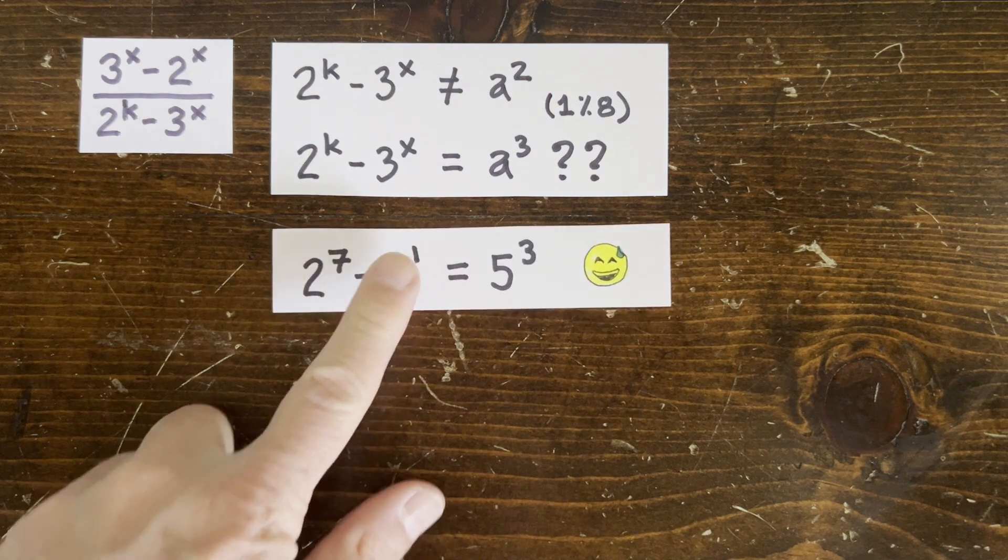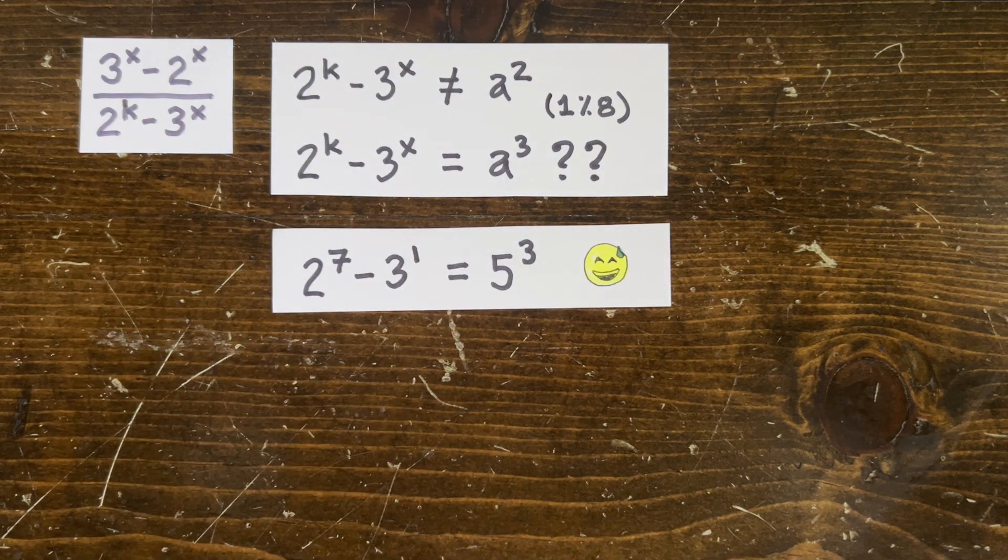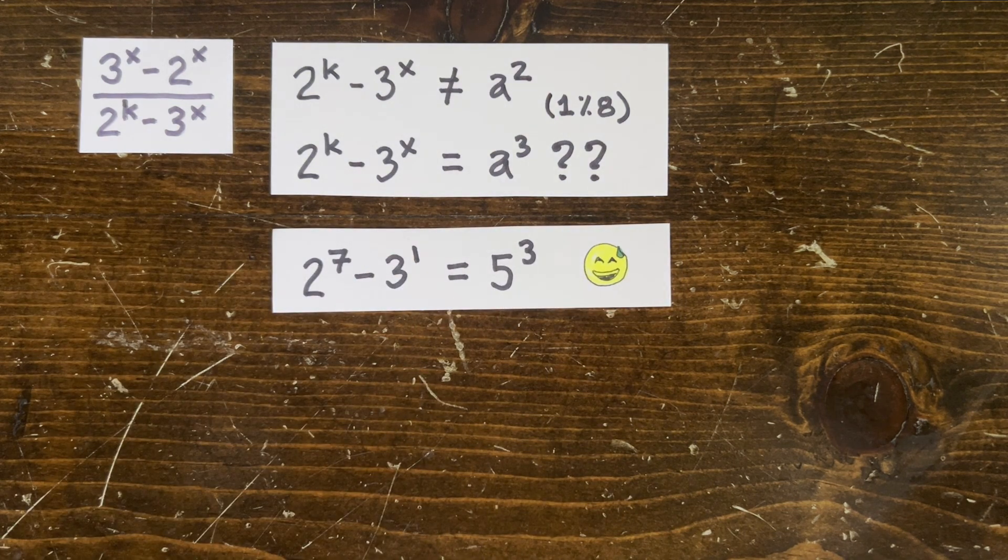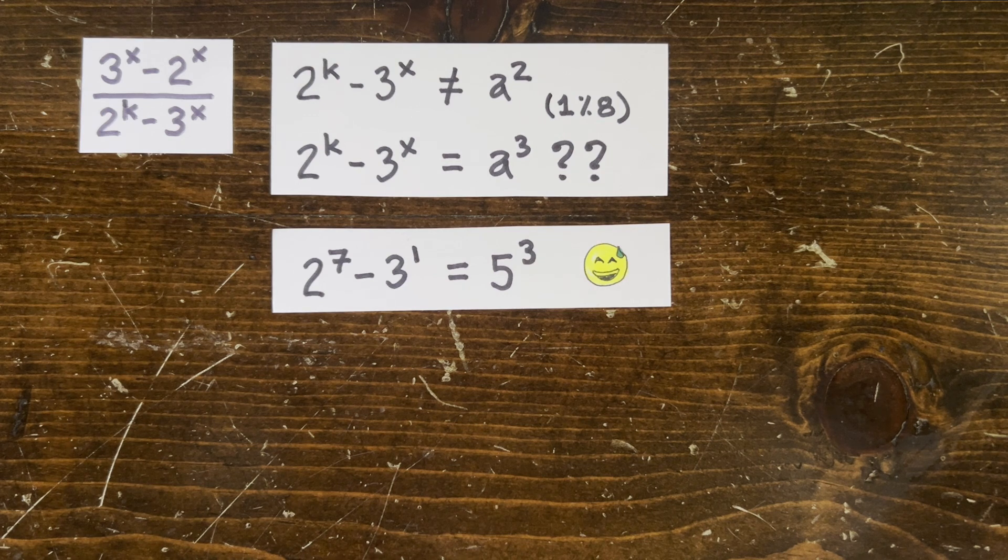I found out that 2 to the 7th minus 3 to the 1st is 5 cubed. So there is at least one cube. And so the universe didn't explode.